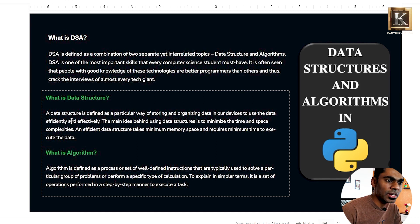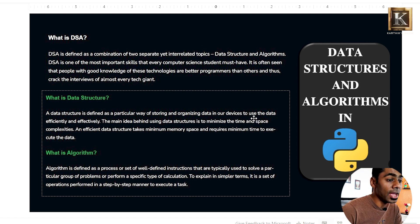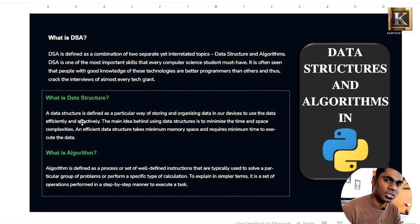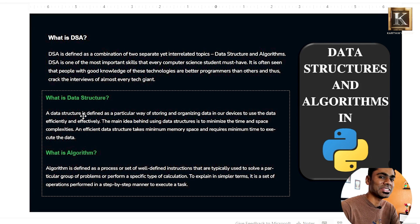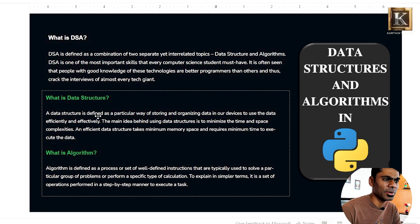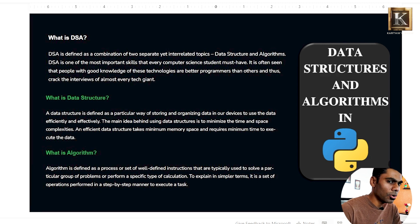Data structure is defined as a particular way of storing and organizing data in our devices to use the data efficiently and effectively. If you are writing a program, you can use data structures. Examples include stack, queue, linked list, array, and strings — the entire field of data structures.